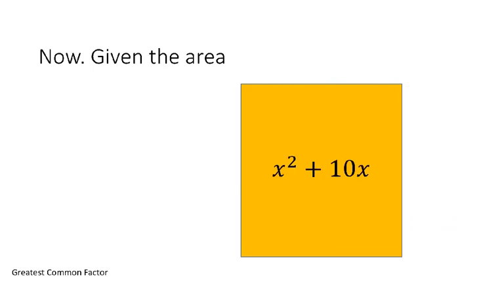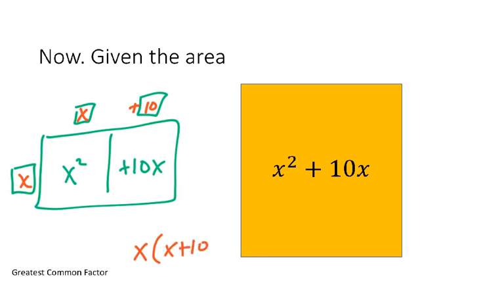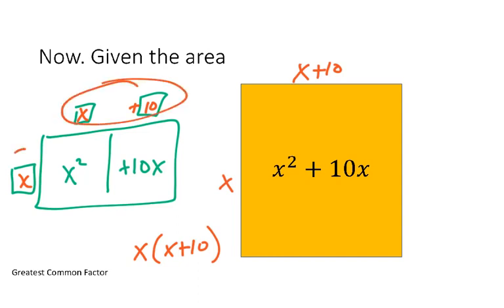We can also use the box organizer to help with this. For x² + 10x, we set up a box with those two terms and look for things that multiply together to get each. The greatest common factor here is x. Then x times something gives x², so that something is x, and x times something gives 10x, so that something is 10. So the factored form is x(x + 10). The box method really helps you see which values are your two factors.